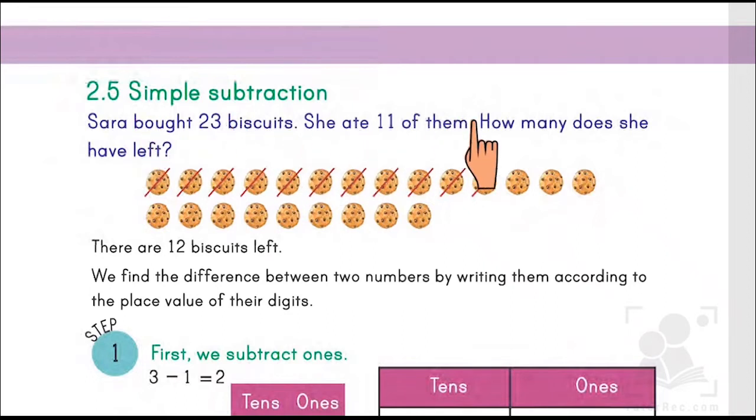She ate 11 of them. How many does she have left? So what we are going to do is we are going to mention all 23 biscuits over here and cut off the 11 ones. Then after cutting these ones, she has left with the remaining ones, which is the answer of the subtraction.